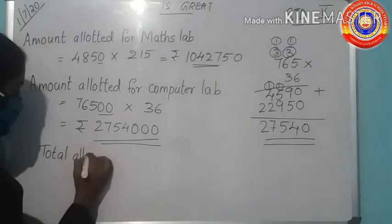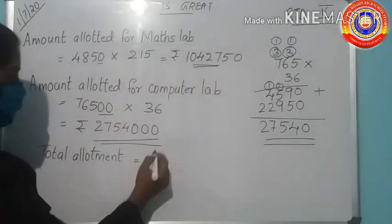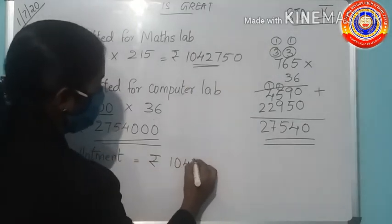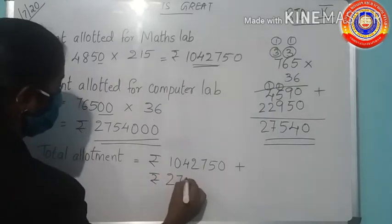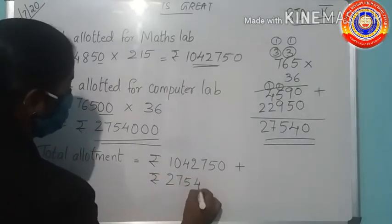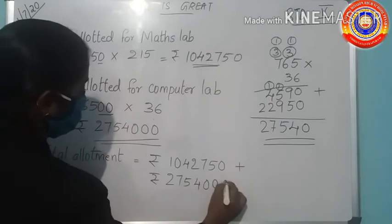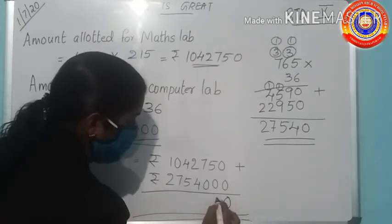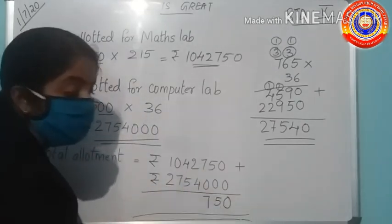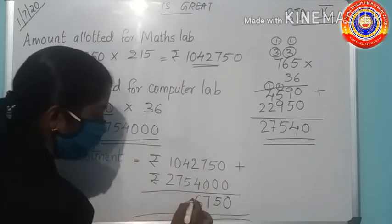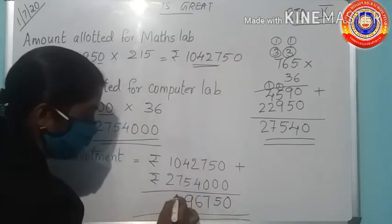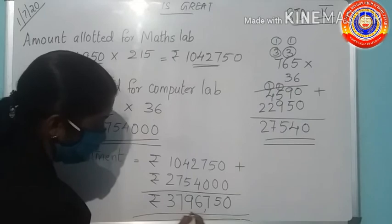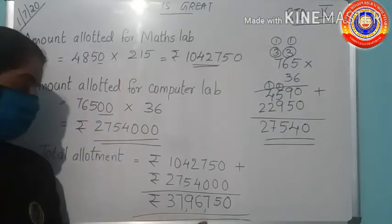Next, you have to find the total allotment equals rupees 10,42,750 plus 27,54,000. Then add these two numbers: 0 plus 0 is 0, 5 plus 0 is 5, 7 plus 0 is 7, 2 plus 4 is 6, then 4 plus 5 is 9, 0 plus 7 is 7, 1 plus 2 is 3. Then you got the total allotment as 37,96,750. All of you understood this?